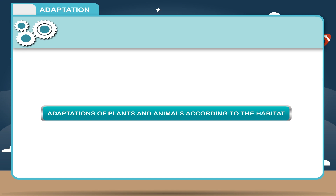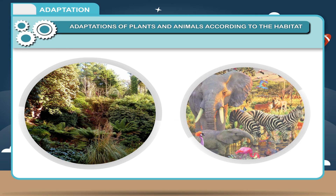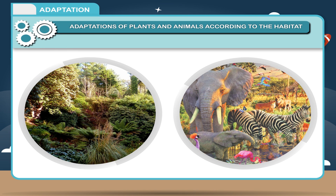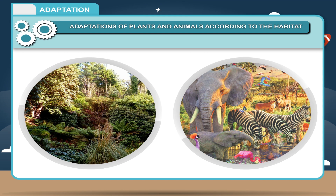Adaptations of Plants and Animals According to the Habitat. Plants and animals adapt themselves to survive in a particular environment. Plants and animals have different features to survive in a particular surroundings.